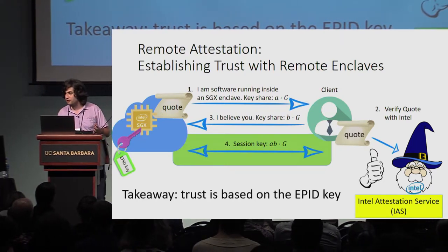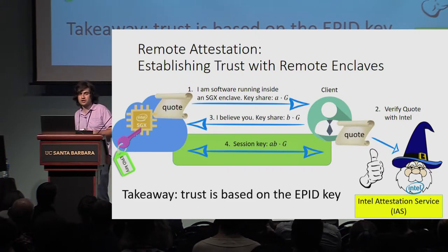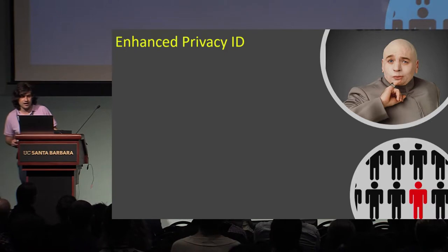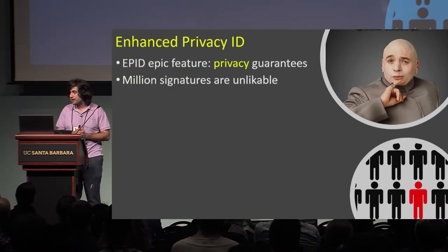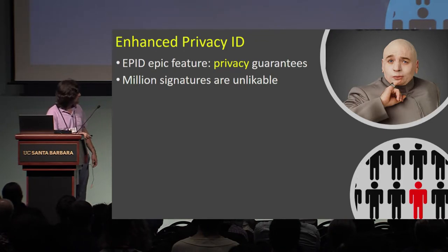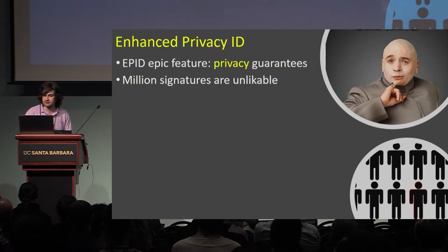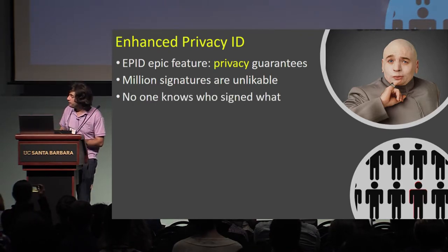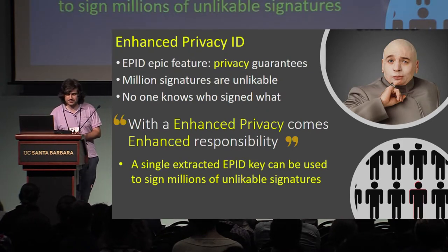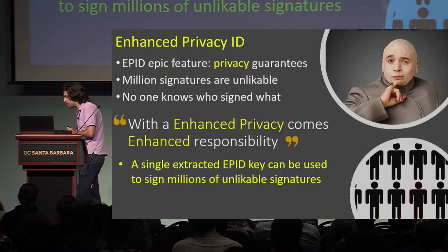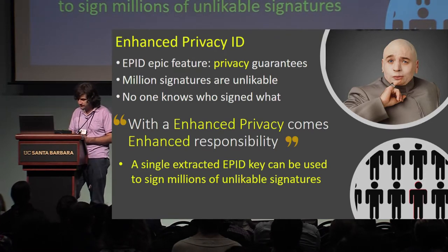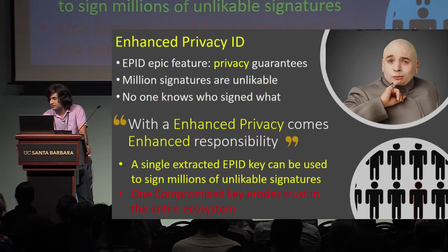We got our SGX key — but so what can we do with it? To understand that, I need to dig deeper into the SGX Enhanced Privacy ID group signature scheme. It's a group signature, and it has an epic feature: privacy. It's unlinkable, which means nobody can tell who signed what and how, and you cannot link a signature to its public key or to the identity of the signer. Unfortunately, with enhanced privacy comes enhanced responsibility, because even a single extracted EPID key can be used to forge signatures for millions of machines without anybody being able to distinguish between signatures made by the attacker and genuine signatures made by SGX machines — which basically means that one compromised key erodes trust in the entire SGX ecosystem.